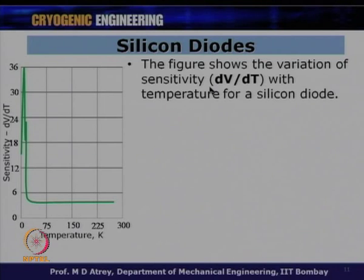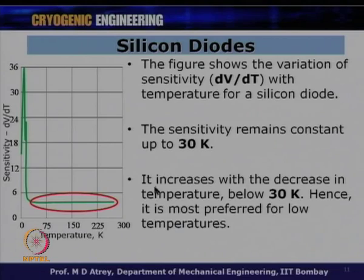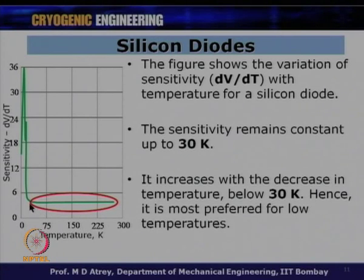The figure shows the variation of sensitivity (dV/dT) with temperature for a silicon diode. The sensitivity remains relatively constant up to about 30 Kelvin, then suddenly the slope increases — sensitivity is higher for lower temperatures. While sensitivity is already significant from room temperature to 30 Kelvin, it increases markedly below 30 Kelvin.